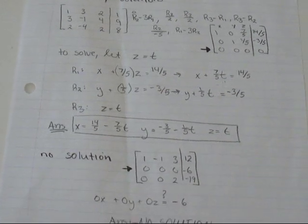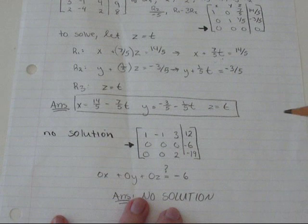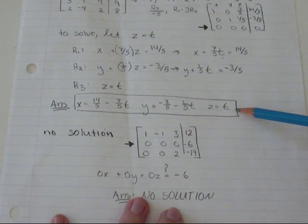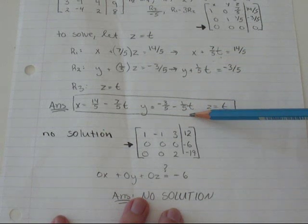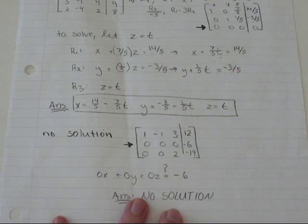So your answer, you don't just write infinitely many solutions. You let z equal t and then you write what x equals when z equals t and what y equals when z equals t.